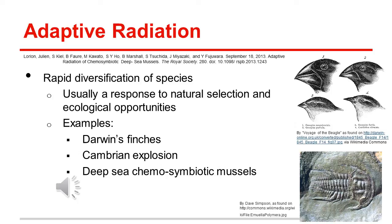One of the most well-known examples of adaptive radiation would be Darwin's Galapagos finches. Because of their location on an island, these finches rapidly diversified to accommodate the different niches in their new environment, forming a vast number of species distinct from the finches on the mainland.